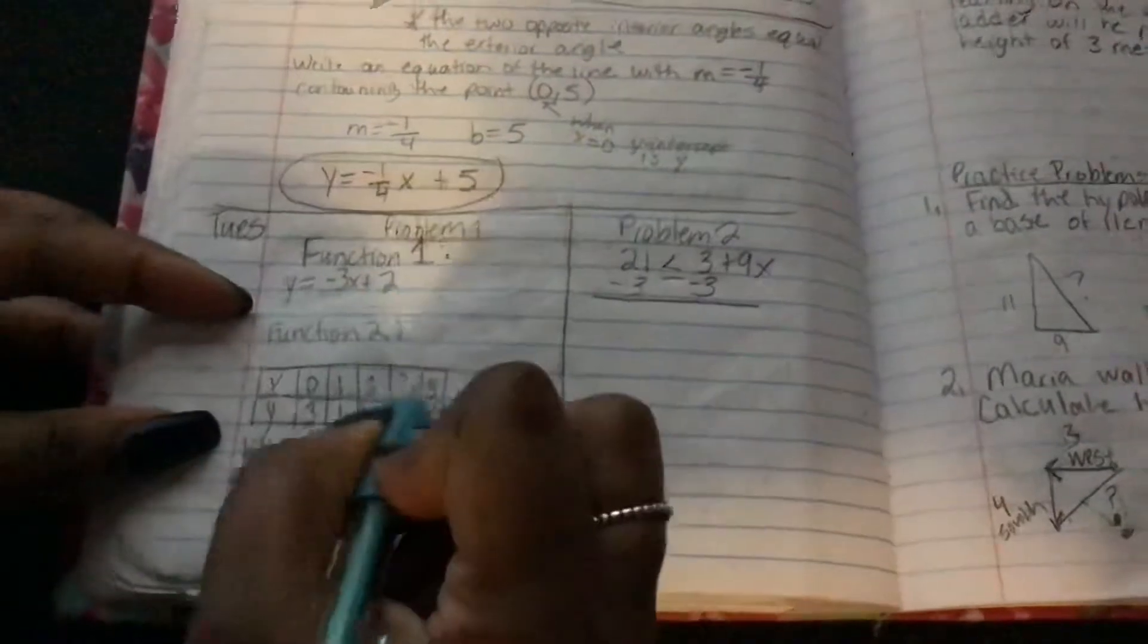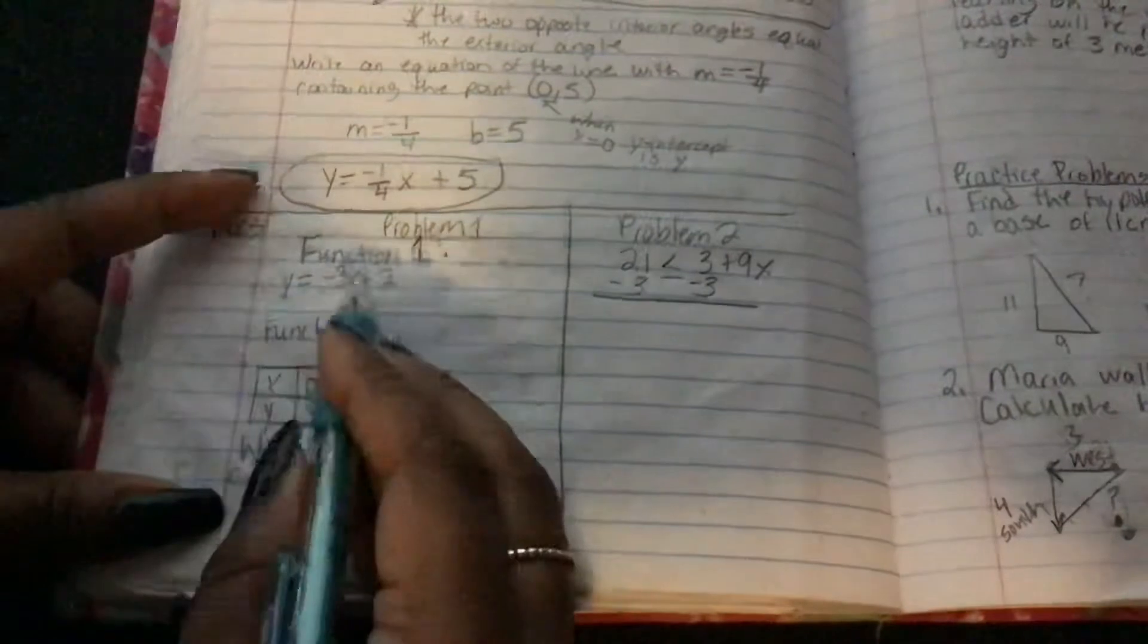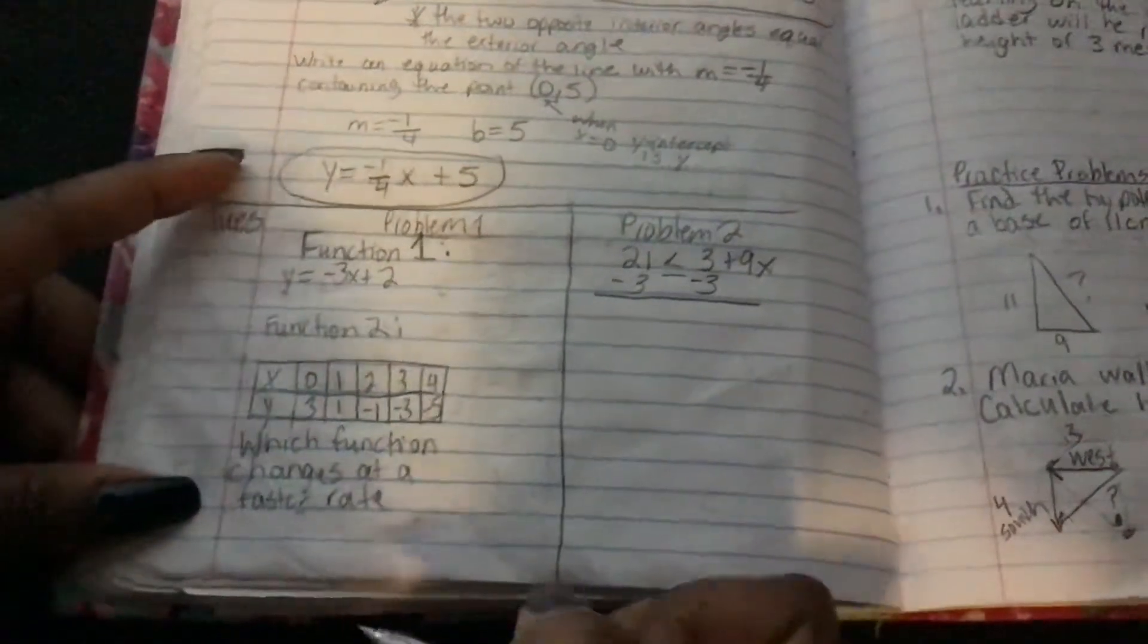The second function is a table, where these are your x values, these are your y values. It's saying which of these functions, function 1 or function 2, changes at a faster rate.